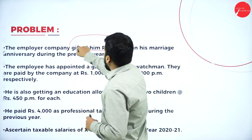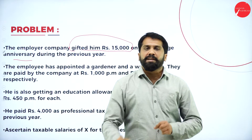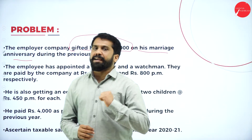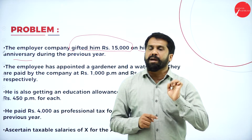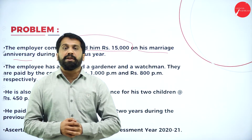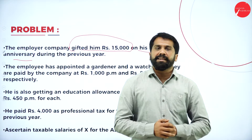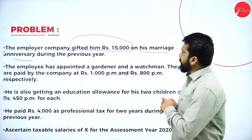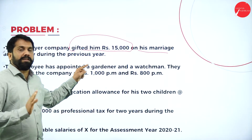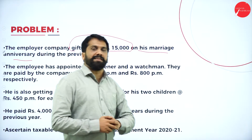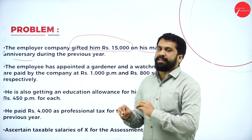The employer gifted him 15,000 on his marriage anniversary. Gift up to 50,000 is exempt irrespective of person. Gifts received from blood relatives or on the occasion of marriage are also exempt. However, in this case, it is a marriage anniversary — not the marriage occasion itself — and it is not from a blood relative. Moreover, any gift received from an employer under salary is fully taxable.